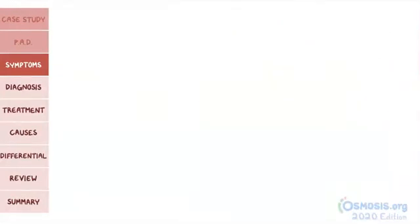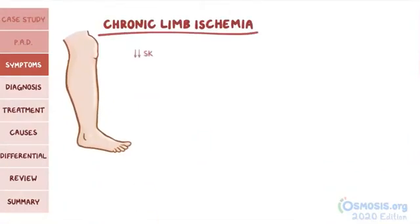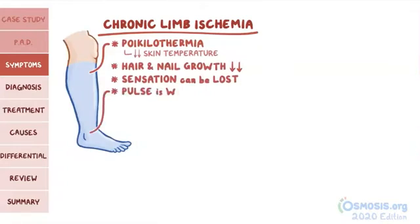In addition to claudication, chronic limb ischemia may produce some physical changes. This includes a decrease in the skin temperature called poikilothermia. Also, hair and nail growth decrease and sensation can be lost. On physical exam, the pulse distal to the obstruction is weak and there's diminished capillary refill in the affected area.